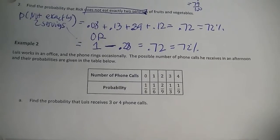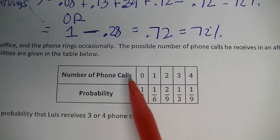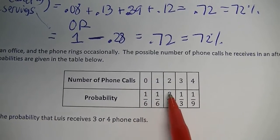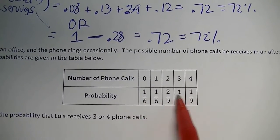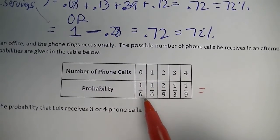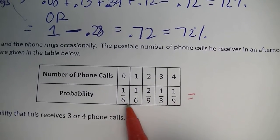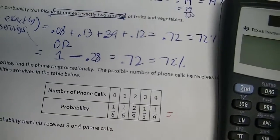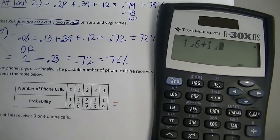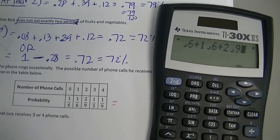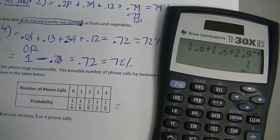Example two. Luis works in an office and the phone rings occasionally. The possible number of phone calls he receives in an afternoon and their probabilities are given in the table — this time written as fractions. Zero calls: one-sixth. One call: one-sixth. Two calls: two-ninths. Three calls: one-third. Four calls: one-ninth. All of those add up to one whole.